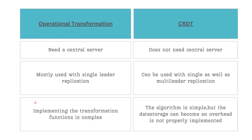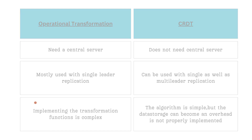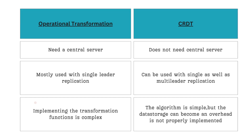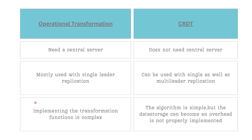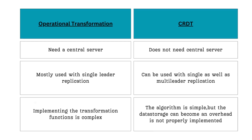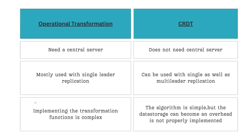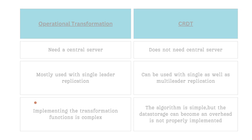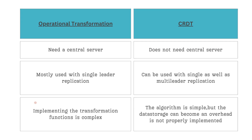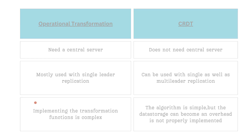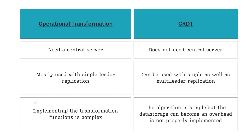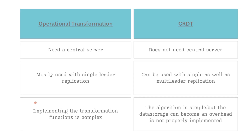Another consideration: OT mostly works with single-leader replication, while CRDTs can be used with both single and multi-leader replication — relevant when trading off between performance and latency. A third point: implementing transformation functions in OT is highly complex, requiring significant time, effort, and maintenance, while the CRDT algorithm itself is simpler — what matters more is how the data structure is properly implemented for your specific requirements and use cases.